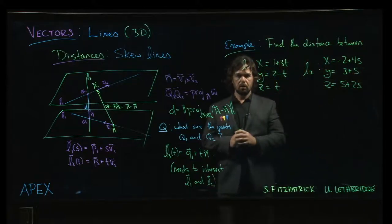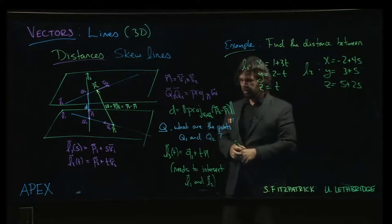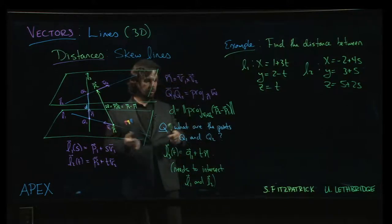So here are two lines and we already showed that these two lines are skew in a previous example. Now we want to figure out what is the minimum distance between those two lines.